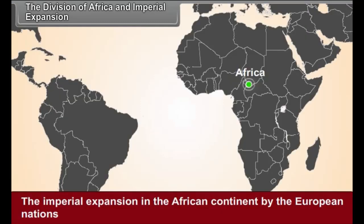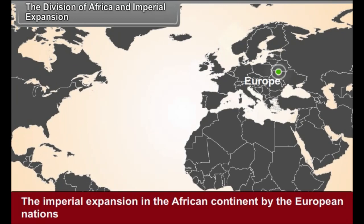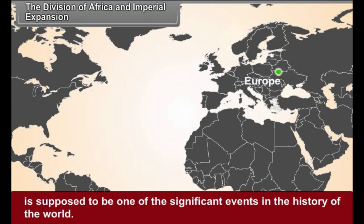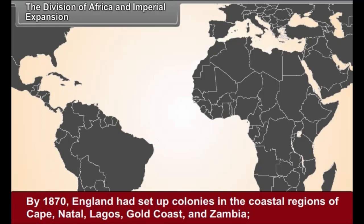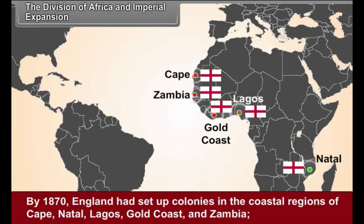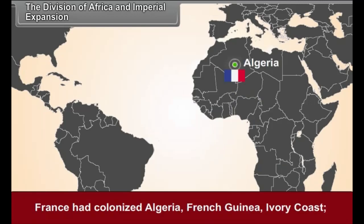The Division of Africa and Imperial Expansion: The imperial expansion in the African continent by European nations is considered one of the significant events in world history. By 1870, England had set up colonies in the coastal regions of Cape, Natal, Lagos, Gold Coast and Zambia. France had colonized Algeria, French Guinea and Ivory Coast, whereas Portugal brought under its control Mozambique and Angola. Belgium became the first colonizer in the African continent by establishing its colony in the second half of the 19th century.